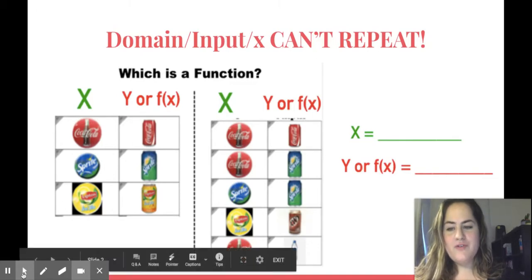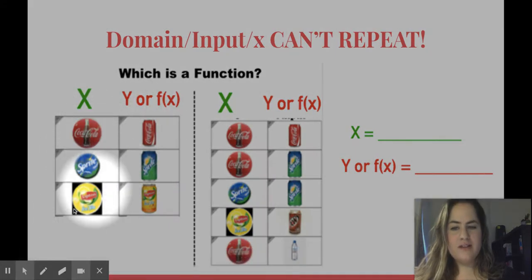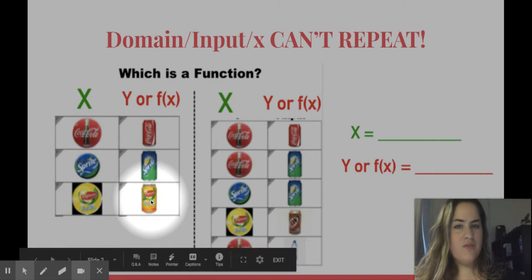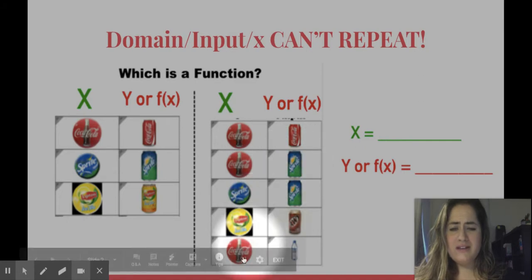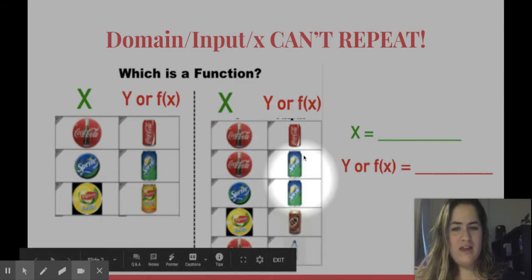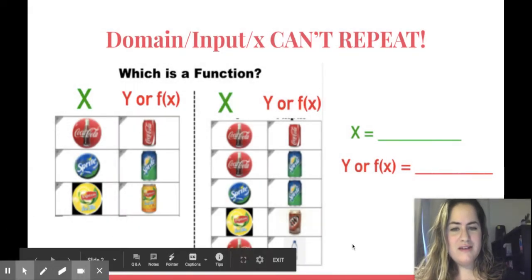So if I look at my first machine here, whenever I hit Coke, I get Coke. If I hit Sprite, I get Sprite. Iced Tea, I get Iced Tea. Functioning properly. When I look at the next machine, Coke I get Coke, Coke I get Sprite, and then Coke I get water. This machine is a mess. It's not functioning properly. So I'm going to say that this is a broken machine.